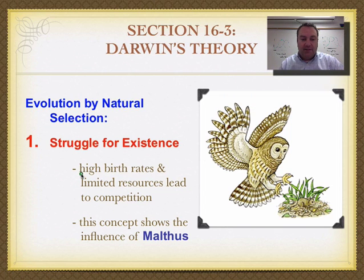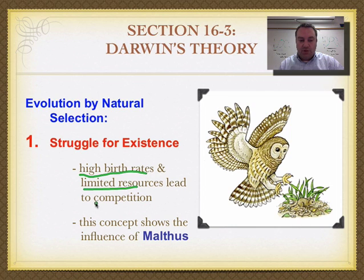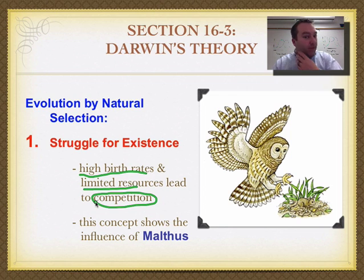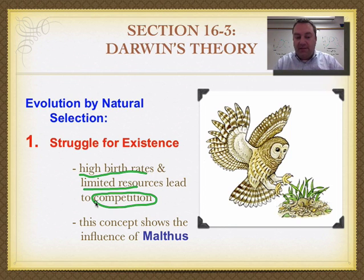Darwin noted that living things have very high birth rates and also have limited resources, which means there's going to be competition because there's not enough resources for every single offspring that is born to survive and create its own offspring. So the limited resources are going to be competed for by the surviving offspring.